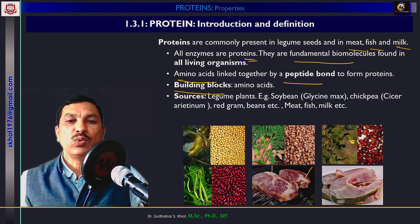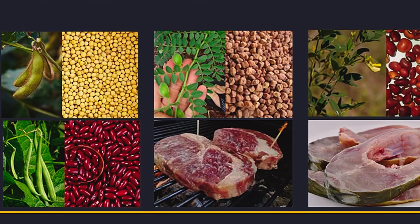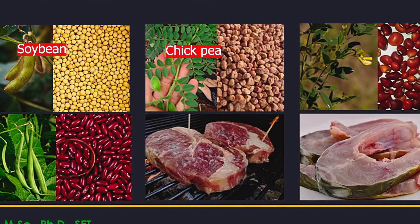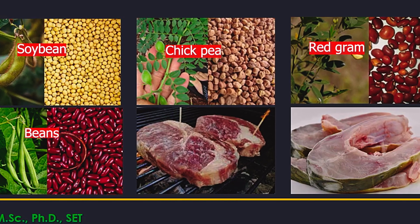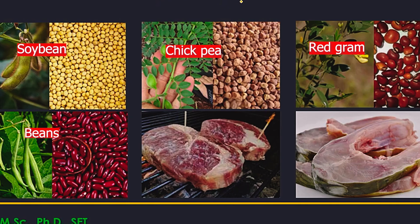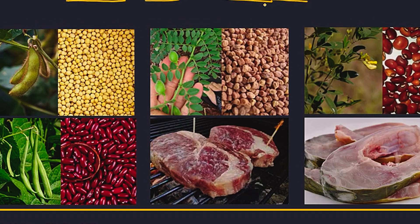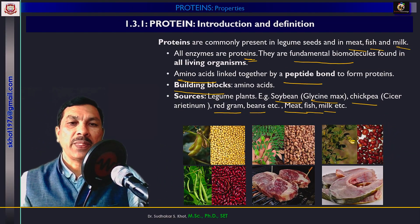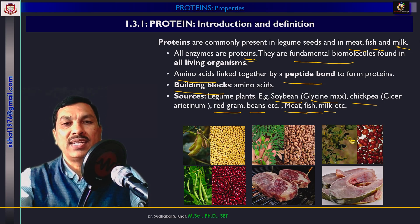Now what are the general sources of proteins? Generally, we get proteins from soya bean. These are examples of legume plants — soya bean, botanically Glycine max; chickpea, Cicer arietinum; red gram; beans; etc. From animal sources, proteins are present in meat, fish, crab, milk, etc. So these are the general sources of proteins that we take regularly in our diet.